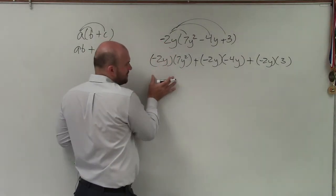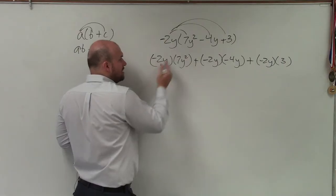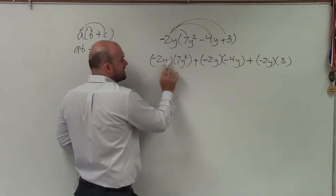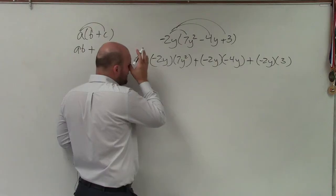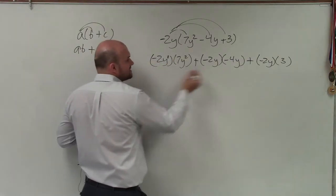So whenever we're multiplying our monomials, make sure that, remember, we multiply the coefficients, but then we add the exponents. And remember, if we don't have an exponent front, we can represent that as a 1.